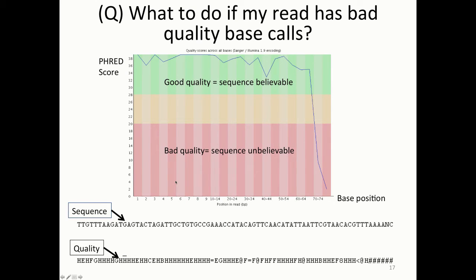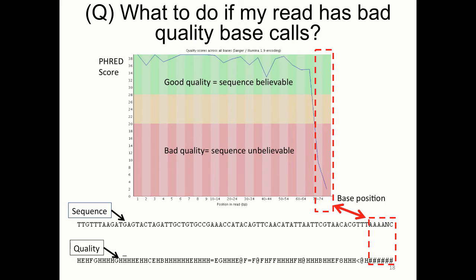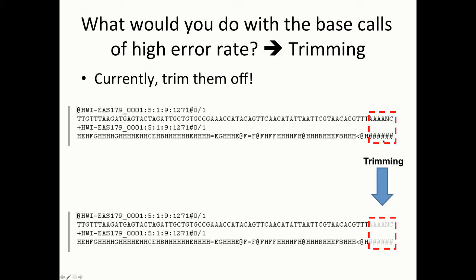Let's consider a special case: what to do if your read has bad quality base calls. In this graph, the read quality is generally okay for the first 70 base pairs, but the last six base pairs have very bad quality — those CNAAA bases have really bad quality and cannot be trusted, as is apparent from the quality score. One way to deal with this kind of bad quality is to remove those sequences — basically delete them. When you delete those bases, you also want to delete the corresponding quality scores. That is trimming.